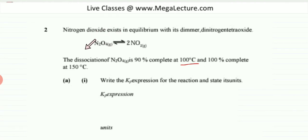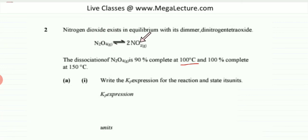90% dissociation means that 90% of N2O4 is converted into NO2. So if you have 10 moles, 9 of them get converted into NO2. The dissociation is 100% complete at 150 degrees centigrade.